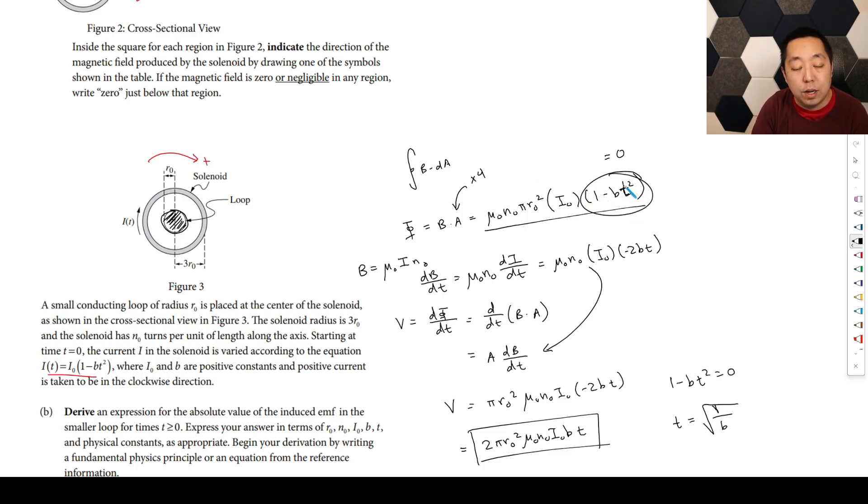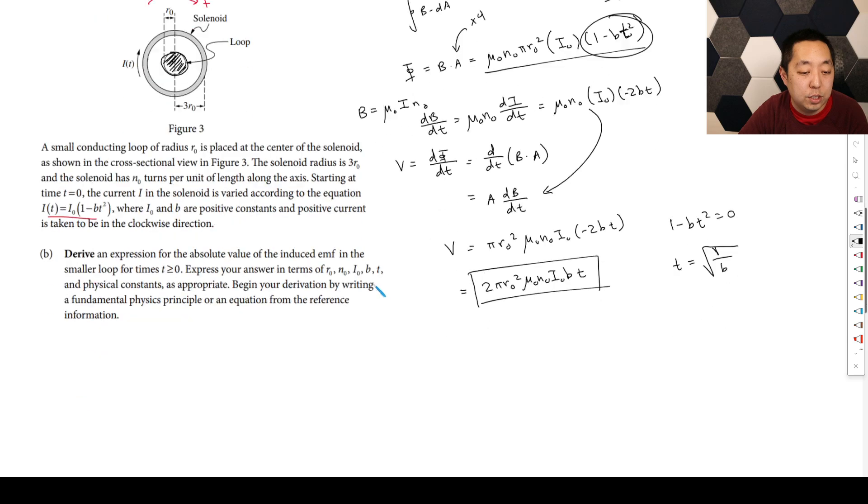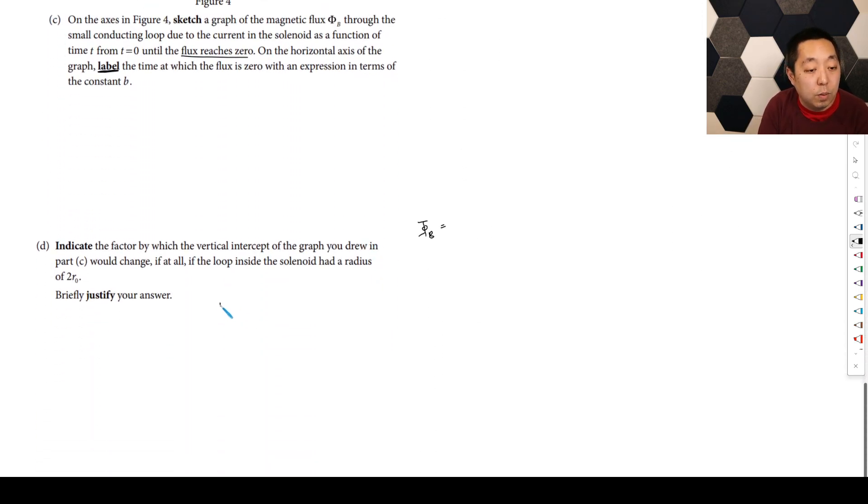And so that's going to be four times the flux. So then this thing's going to be times four. And so that Y intercept, when T is equal to zero, this whole thing will be four times as much. So the Y intercept increases by 4X because the flux is proportional to the area which quadruples when we double the radius. That would be sufficient, something like that.